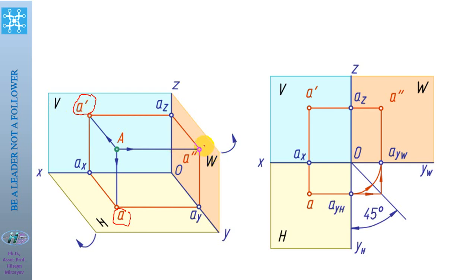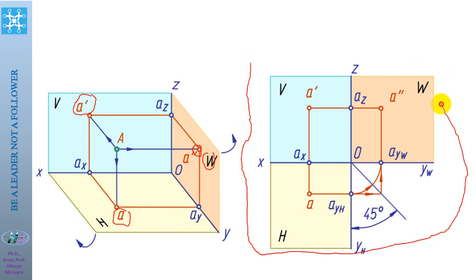The profile projection on plane W is called the profile projection and is denoted as A double-dashed. If we rotate the horizontal plane downward and the profile plane to the right-hand direction, we obtain a flat representation. This type of representation of projections is called a complex drawing.